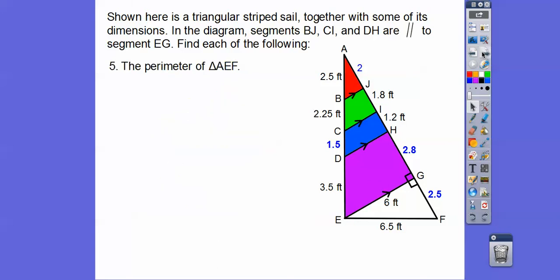So now we're going to use that to find the perimeter of triangle AEF. Here's our triangle with all those side lengths put together. And then we add all those up and we get 26.55. We're not done.